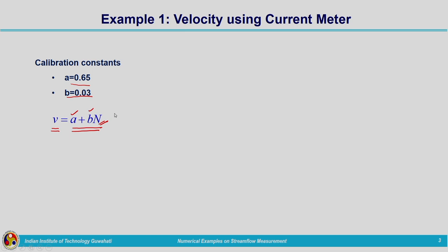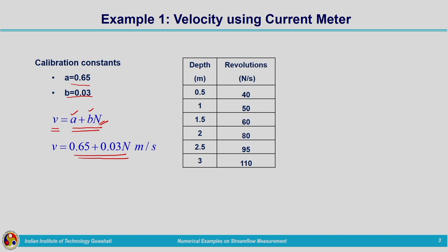The data required for computing velocity are available. We just have to substitute into this equation to get the corresponding velocities at different depths. Our equation for velocity computation will take the form 0.65 + 0.03n, and the value will be in meters per second. The data given includes different depths and corresponding revolutions noted by the current meter. We just substitute n in this equation. For a depth of 0.5 meters, the revolutions given is 40, so that value is substituted to calculate velocity.